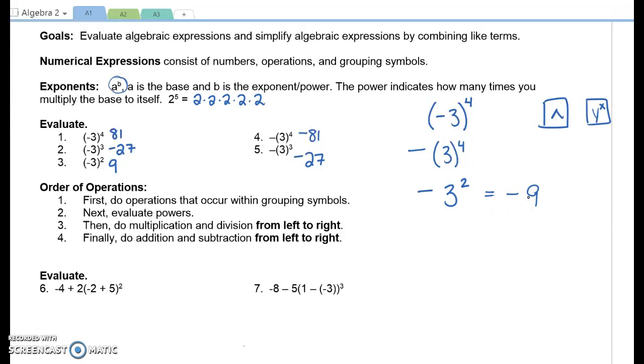Your calculator is going to do exactly what you tell it to do. So you need to make sure when you're using a calculator to raise things to an exponent, make sure you know what you're intending to do. Are you trying to do the number negative 3 raised to the 2nd? Or are you trying to square 3 and then put a negative on?